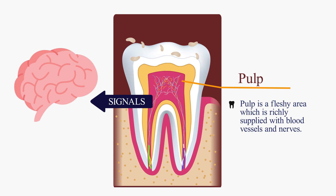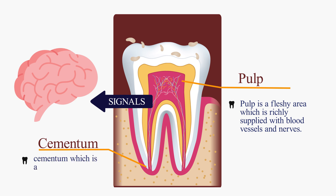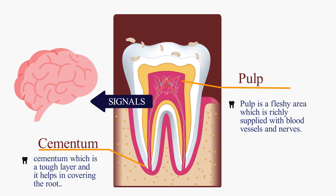Blood vessels in the pulp help in nourishing the tooth. Then there is cementum, which is a tough layer that helps in covering the root. Its hardness is similar to that of bone.